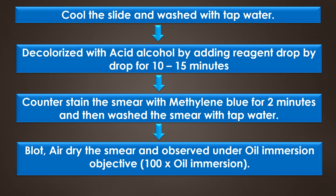After that, cool the slide and wash with tap water, then decolorize with acid alcohol by adding the reagent drop by drop for 10 to 50 seconds until the carbolfuchsin fails to wash from the smear; rinse with tap water. Counter stain the smear with methylene blue for 2 minutes, then wash with tap water. Finally, blot and air-dry the smear and observe under low power objective (10x or 40x) and high power objective (100x oil immersion) of the microscope.